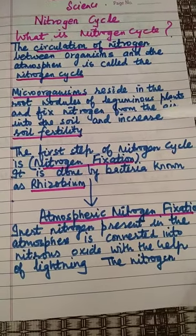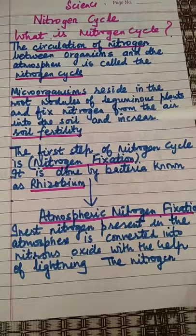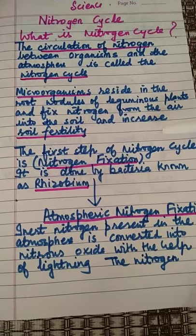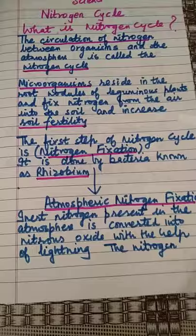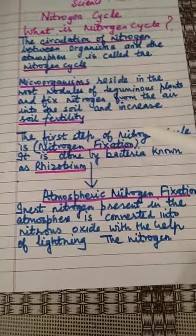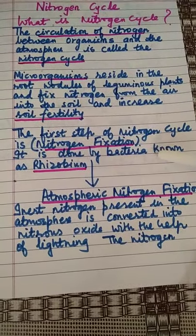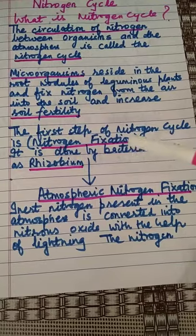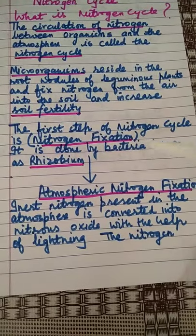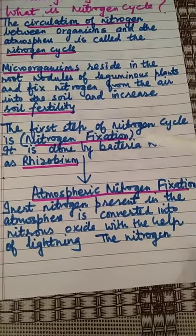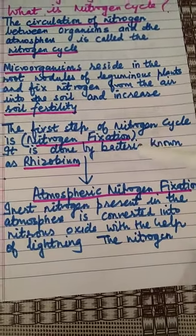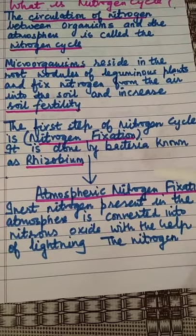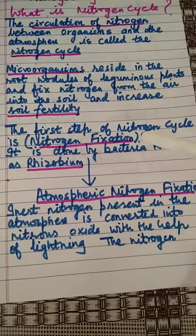Nitrogen fixation is done by bacteria known as Rhizobium. In atmospheric nitrogen fixation, the inert nitrogen present in the atmosphere is converted into nitrous oxide with the help of lightning.